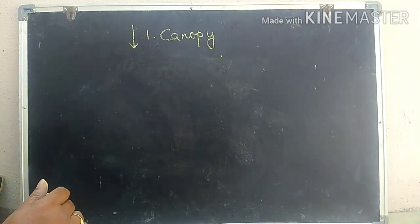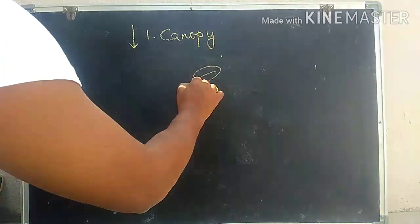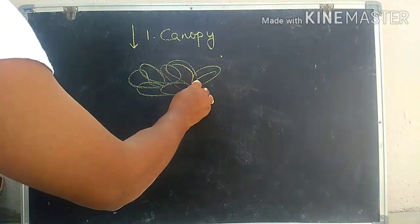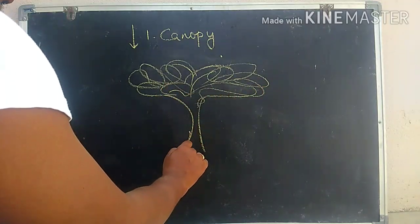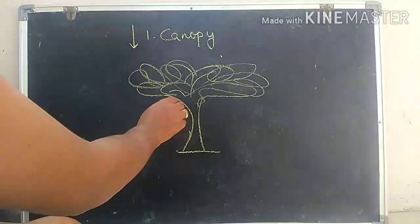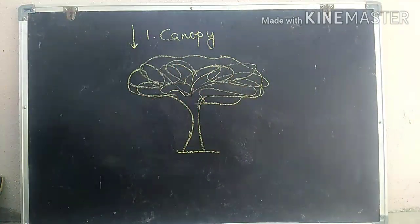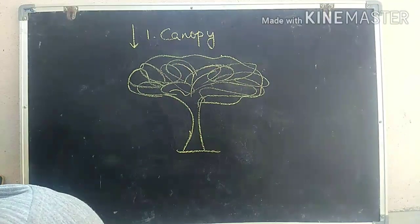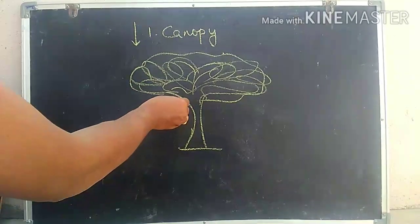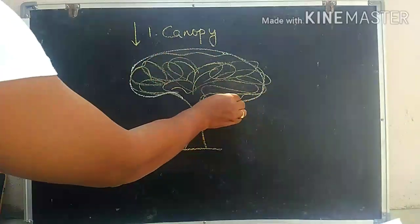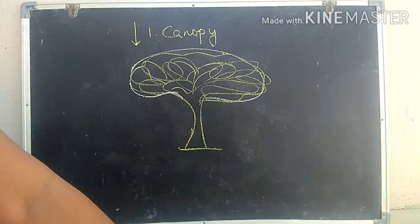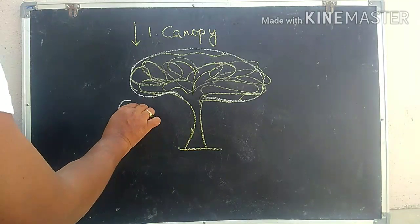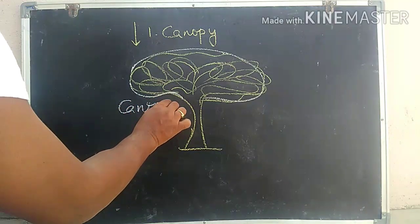The branches and leaves of the trees act like a roof of the forest. When they act as a roof of the forest, it is what we call the crown of the forest. This uppermost layer is what we call the canopy.